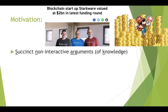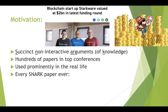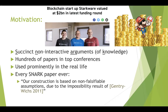Why is one working on SNARKs? By now this is quite obvious because there's just a lot of money in it. There are hundreds of papers in top conferences that all propose new SNARKs or variants thereof for different applications. They are also used permanently in real life. And if you look at the SNARK papers, they all claim the following: our construction is based on non-falsifiable assumptions due to the impossibility result of Gentry-Wichs 2011.